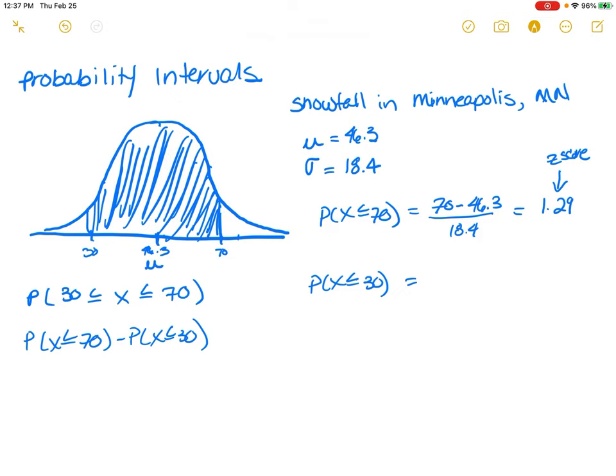And then for the probability of X is less than or equal to 30, we're going to have 30 minus 46.3 over 18.4. And that's going to give us a negative 0.89 as our Z score.